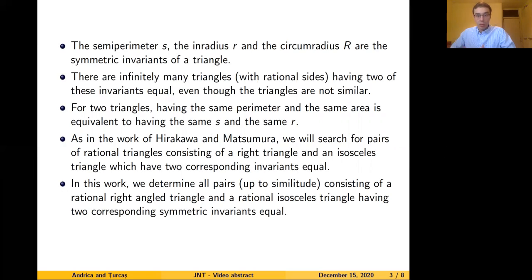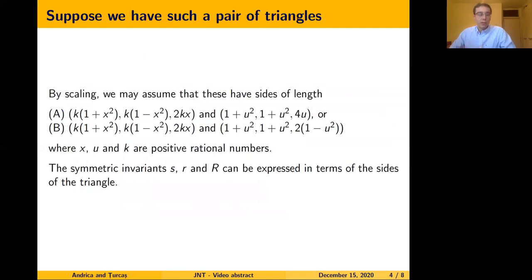As in the work of Hirakawa and Matsumura, we will search for pairs of rational triangles consisting of a right triangle and an isosceles triangle which have two corresponding invariants equal. In this work, we determine all pairs up to similitude consisting of such triangles which have two corresponding symmetric invariants equal. We can show that the side lengths of the triangles can be parametrized by two such expressions, where one is scaled since we are looking for triangles up to scaling, and the numbers that appear are positive rational numbers.